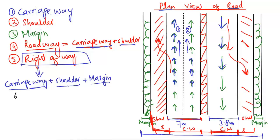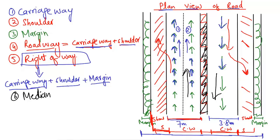The sixth component is the median. The median is a space provided between carriageways running in different directions. You can see it here marked with red lines — this width is known as the median. It is provided to make a separation between carriageways moving in opposite directions in order to avoid accidents.